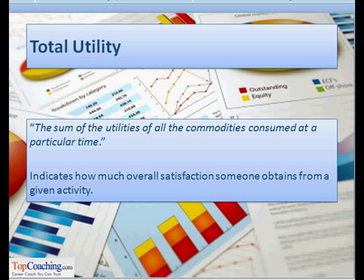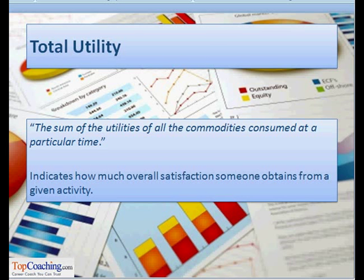The sum of the utilities of all the commodities consumed at a particular time is known as total utility. Total utility is most often used in consumer demand theory to indicate how much overall satisfaction someone obtains from a given activity or from the consumption of a given amount of a commodity.